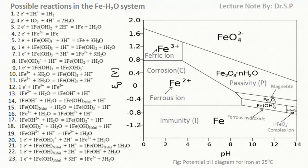This diagram also indicates that if the potential of iron is made sufficiently negative, or shifted cathodically below approximately minus 0.5 V in neutral or acidic environments, iron will corrode much less. This explains the generally accepted cathodic protection criterion of minus 0.85 V.